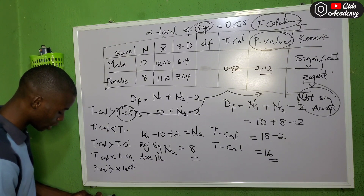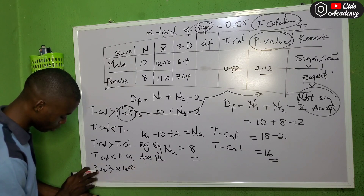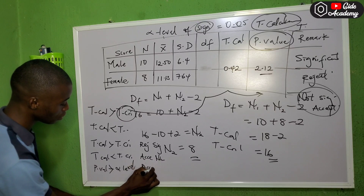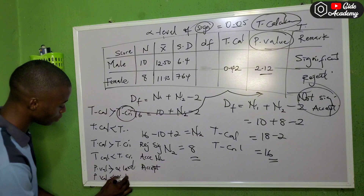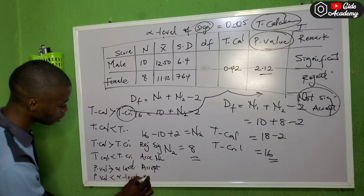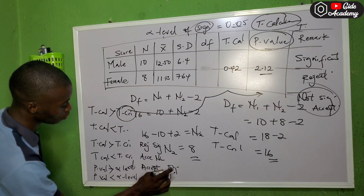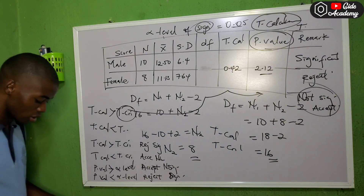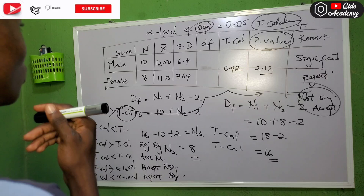Also, when p-value is greater than alpha level, you accept — it is not significant. When p-value is less than alpha level, you reject — it is significant. So: p-value less than alpha → reject (significant); p-value greater than alpha → accept (not significant).